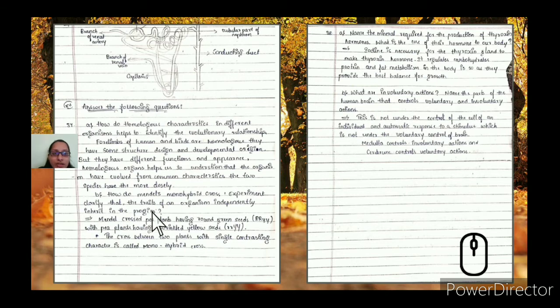How do homologous characteristics in different organisms help to identify evolutionary relationships? Forelimbs of humans and birds are homologous. They have similar structure and design development, but different functions and appearance. Homologous organs help understand that organisms evolved from common characteristics of two different species. Birds use forelimbs for flight, but humans use them for walking, jumping, sitting, running, etc.